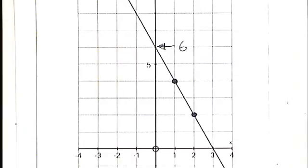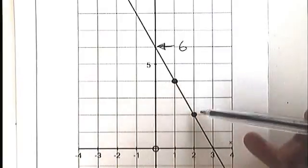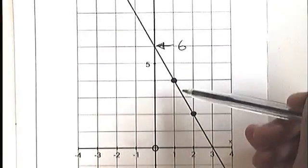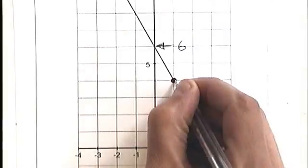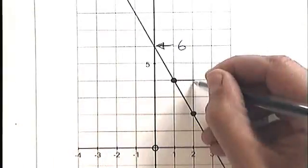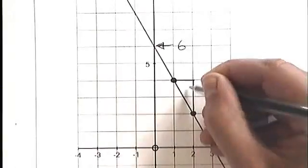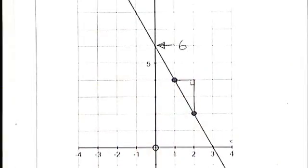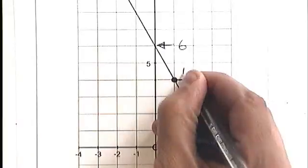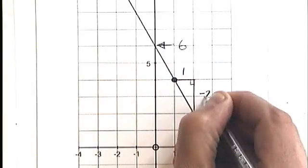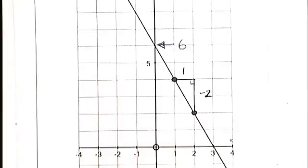Let's have a look at how we calculate the gradient of this. The gradient, remember, is how far up a line goes for every one unit across. If I want to go from this point here to this point here, I'm going to have to go one unit across, but I'm going to have to go two units down, like that. One across, two down. And I've used a minus there to denote the fact that I'm going downhill.